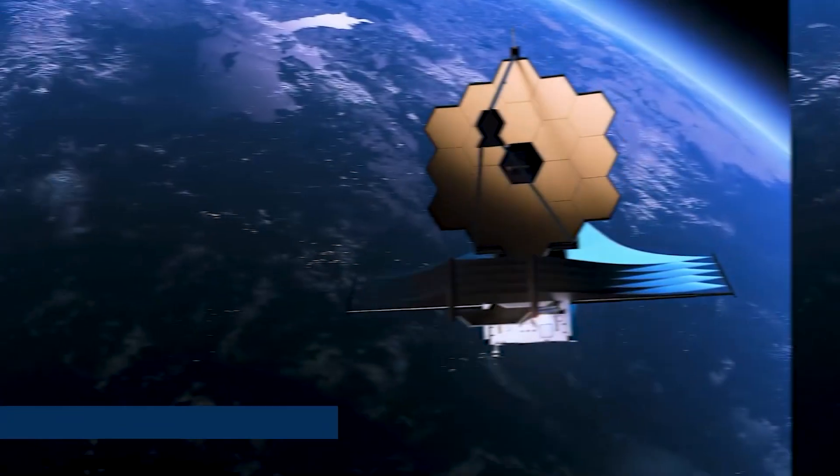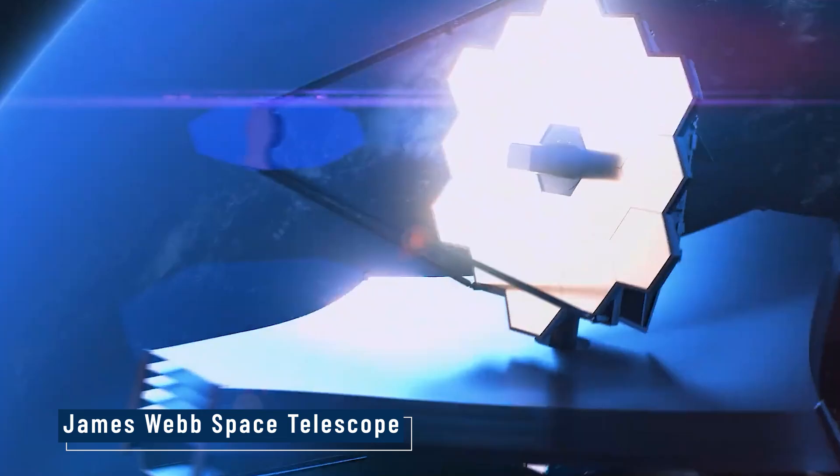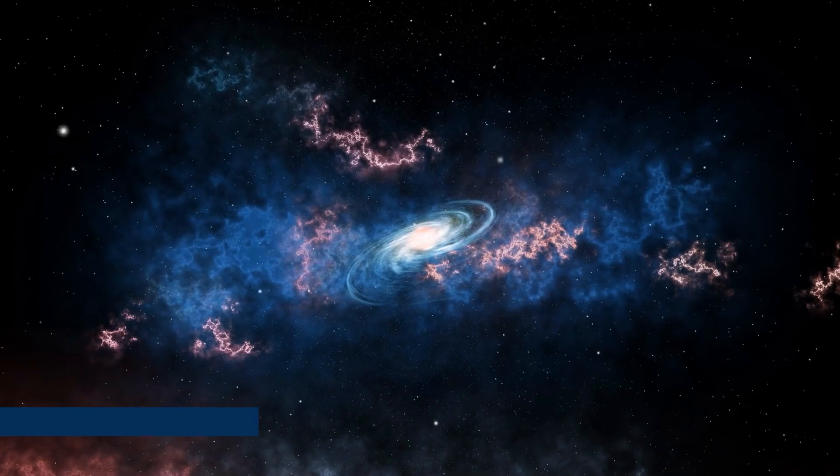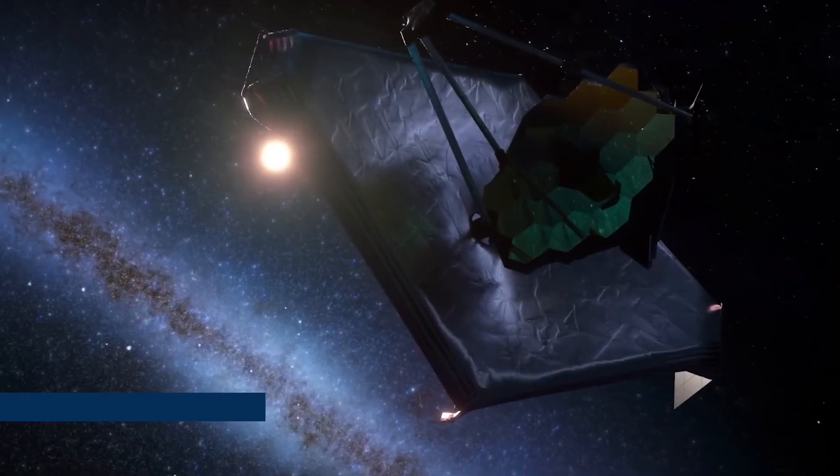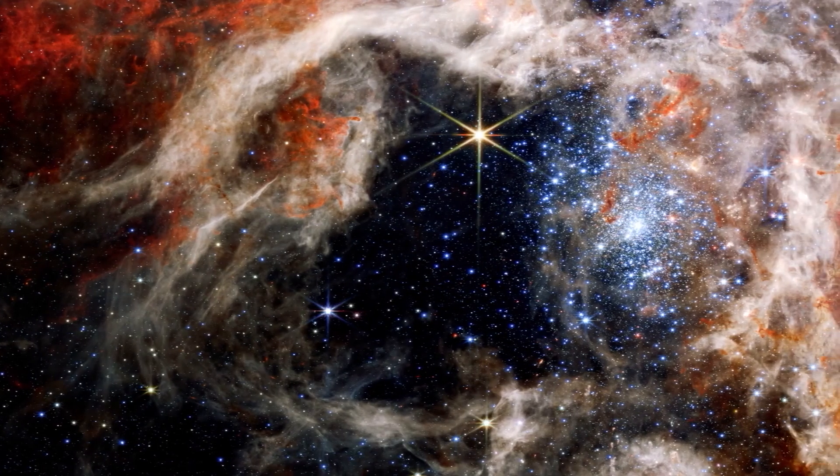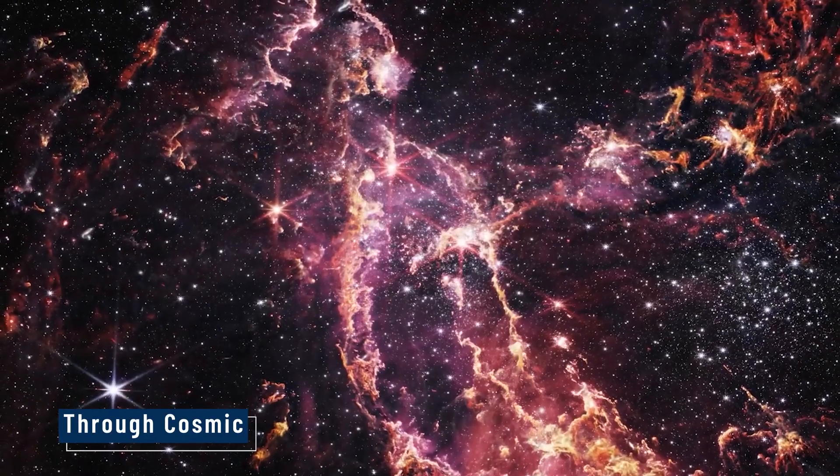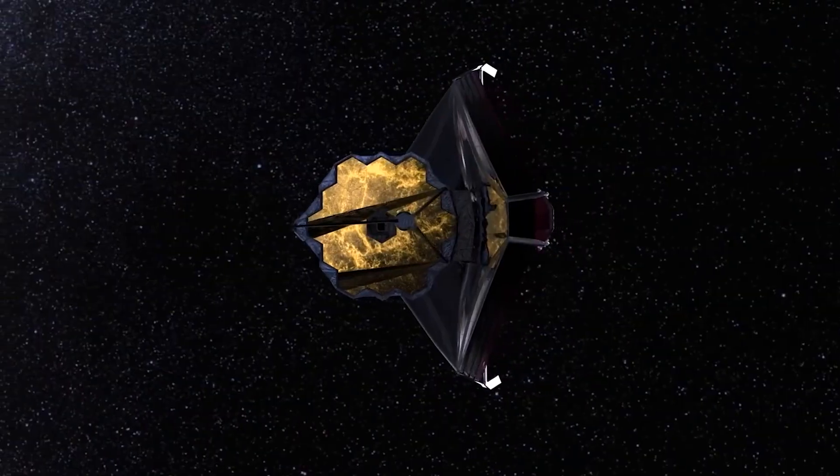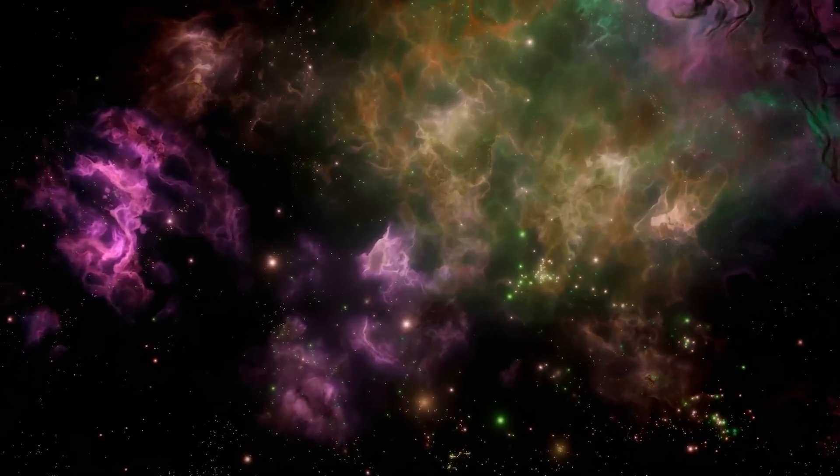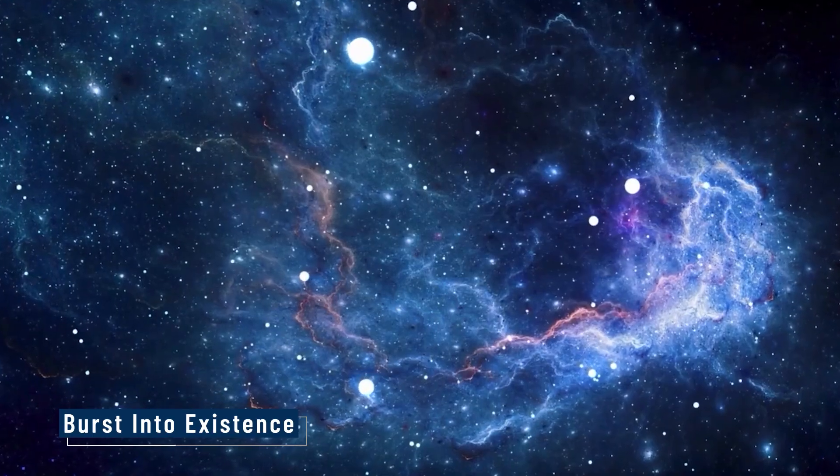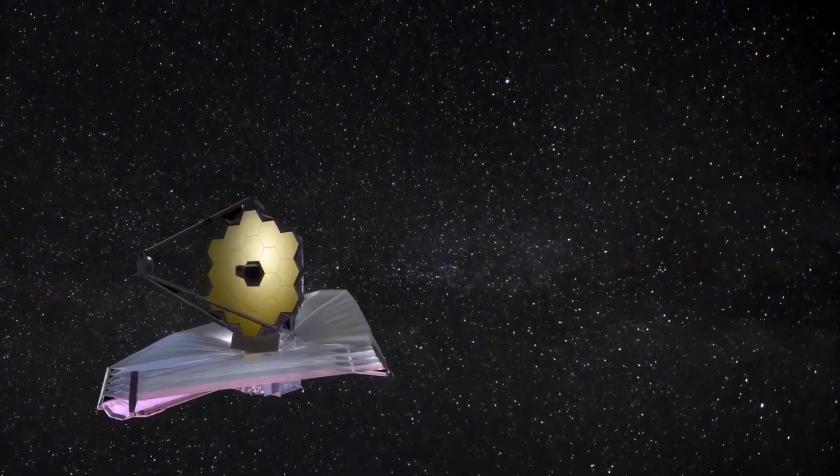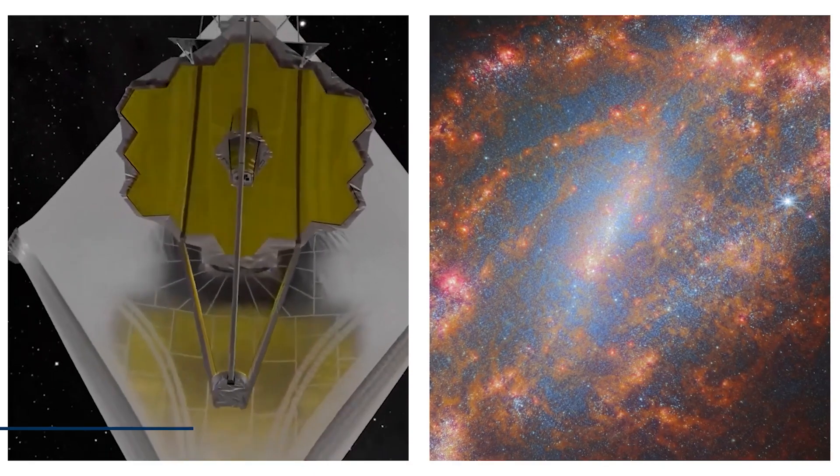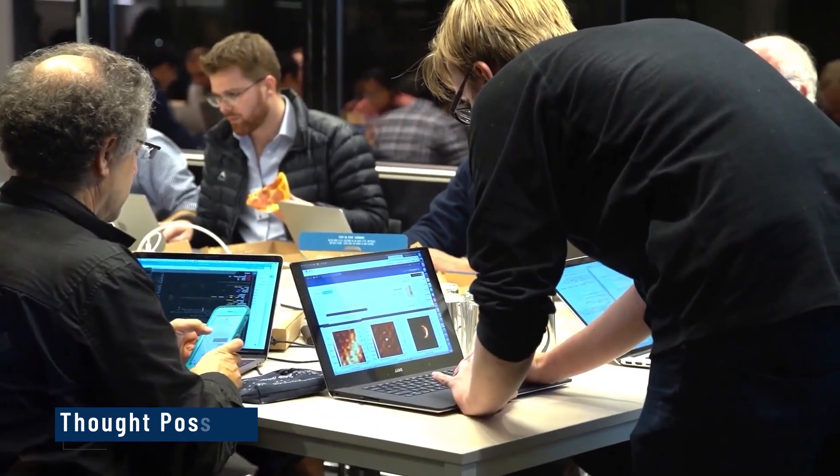The James Webb Space Telescope was designed with one bold goal: to see the universe's earliest light and peer deeper into time than ever before. Launched as the successor to Hubble, Webb uses advanced infrared technology to look through cosmic dust clouds, revealing galaxies hidden from previous telescopes. What sets Webb apart is its ability to capture light from the universe's infancy.